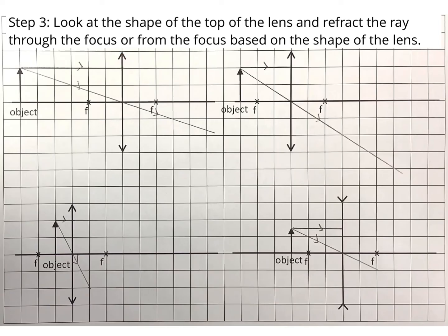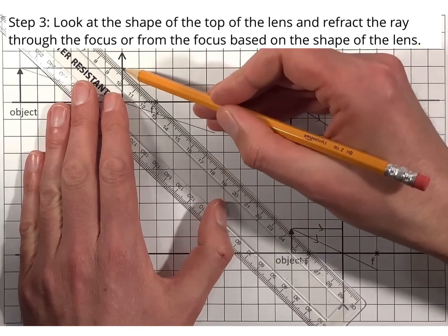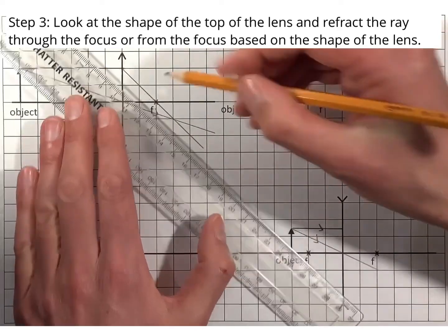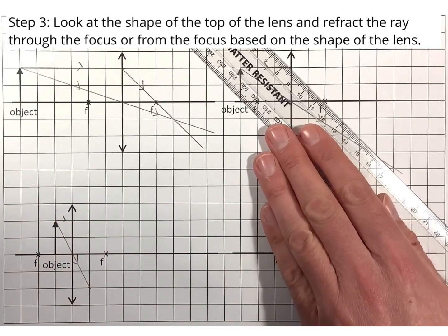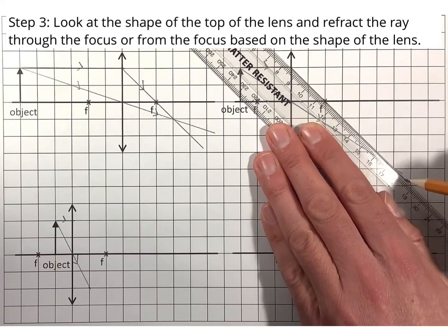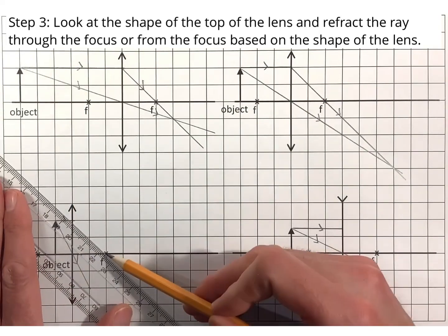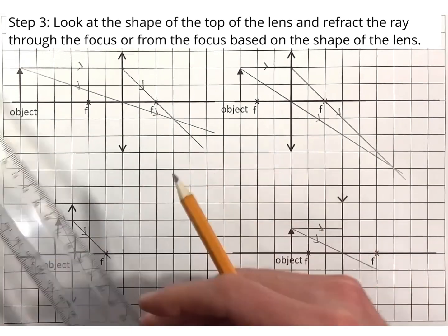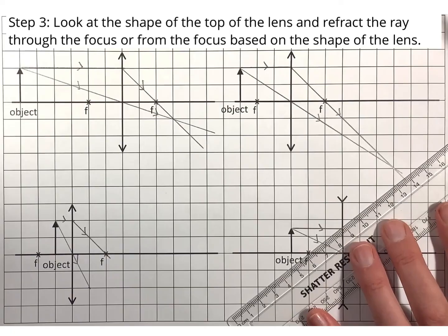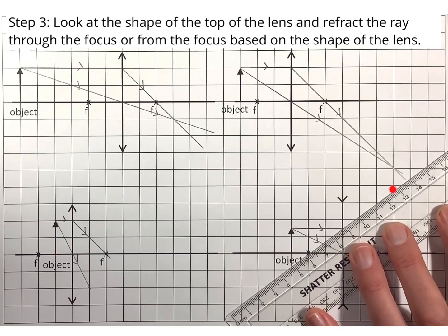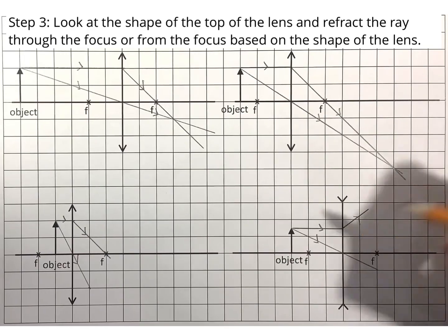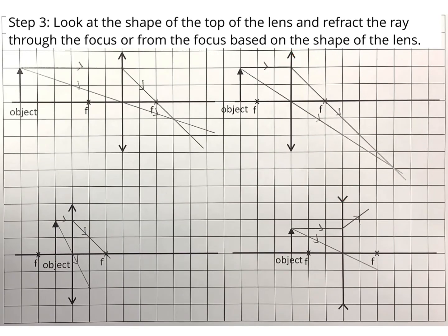For step three, you need to look at the shape of the lens, and this will tell you whether you need to refract the ray through the focus or as if it's come from the focus. For converging lenses, we refract the ray through the focus. But for the diverging lens, the ray goes in the opposite direction, as if it has come from the focus. The key thing is to use the shape of the lens symbol at the top to tell you which of those two things you're going to do.